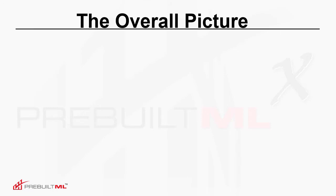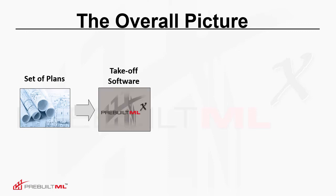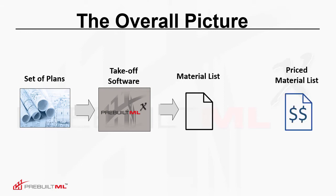As we consider this pricing feature, let's begin by taking a look at the overall picture of a project. First of all, you'll receive a set of plans for the project, which you'll take through the takeoff software, ultimately resulting in a material list. But for many, the end result desired is not just a material list, but a material list that is priced with current store pricing. So how does that transition take place from the material list to a priced material list?